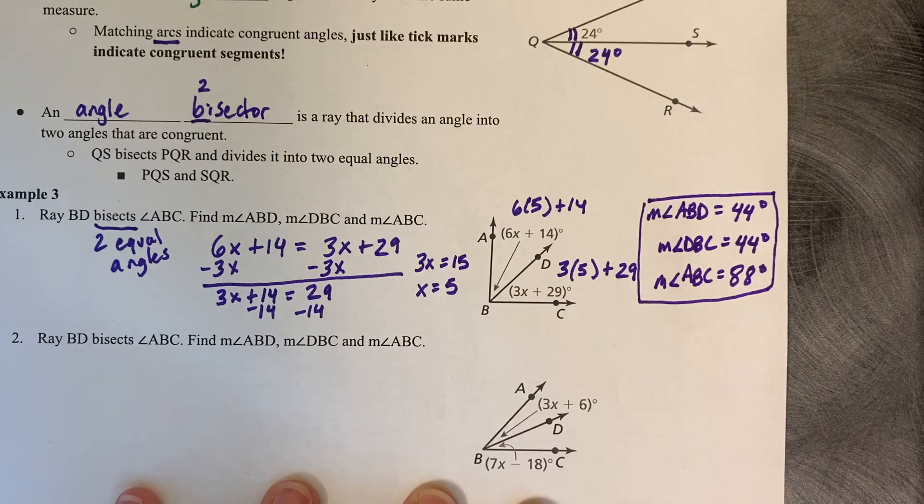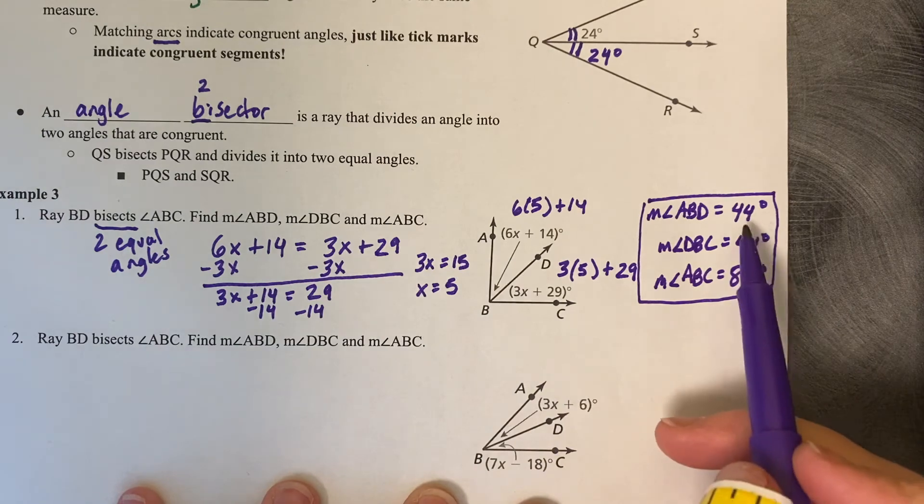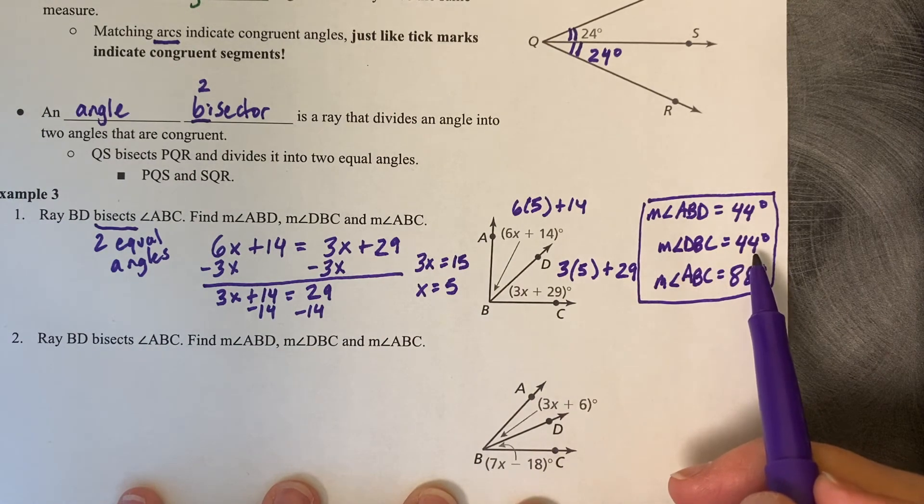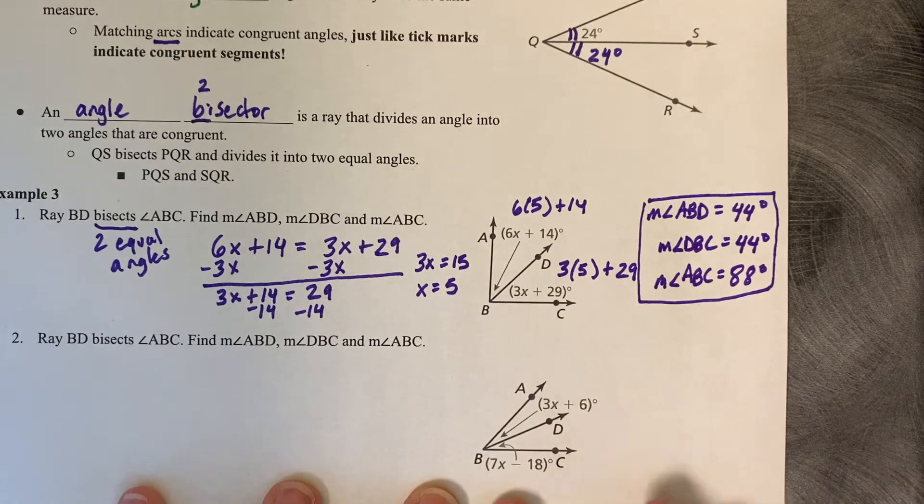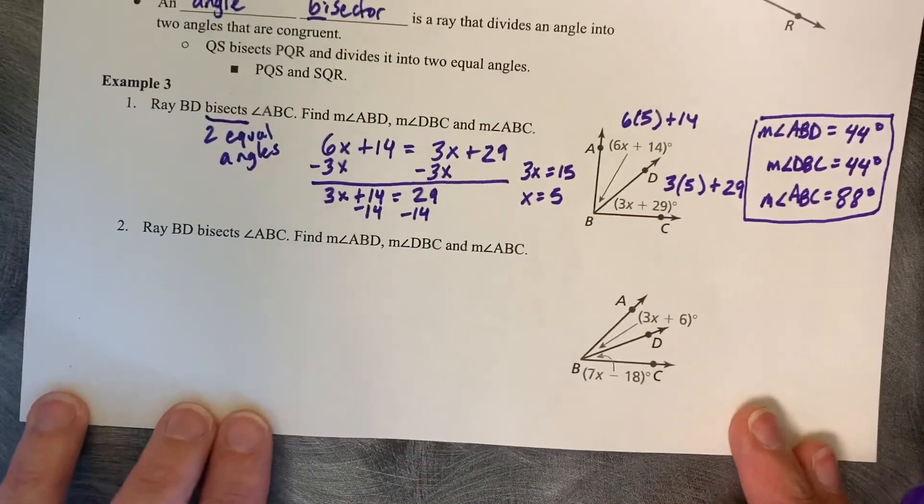You should have gotten the x value equal to 5, so the measure of ABD is 44, the measure of DBC is 44, and the measure of ABC the total is 88.